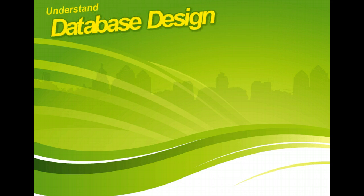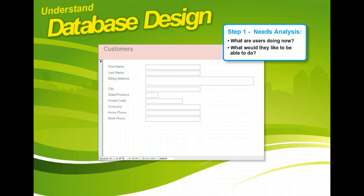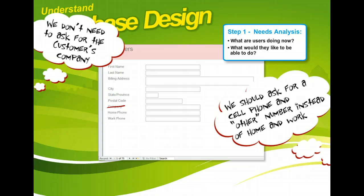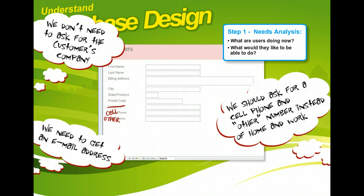During the needs analysis phase, you should look at how people are using the data currently, and what additional data they would like to track. What tasks are they doing? Who does what, and when do they do it? Do they track the data on paper or in some computerized system like various spreadsheets? What reports do they create? Is there anything that they aren't doing now that they would like to be able to do?